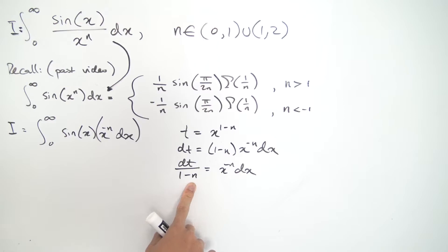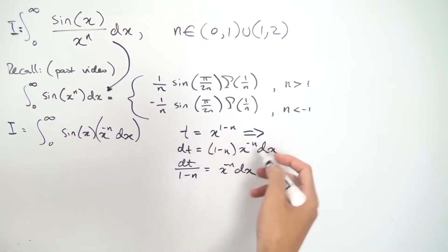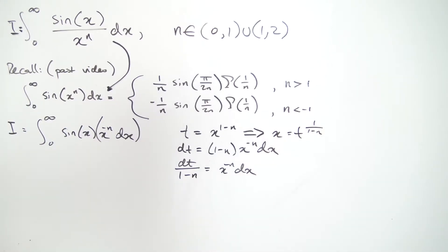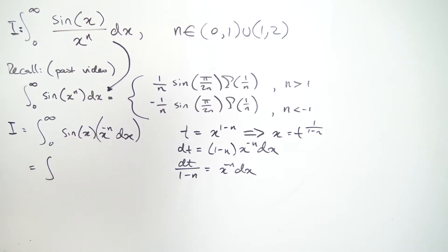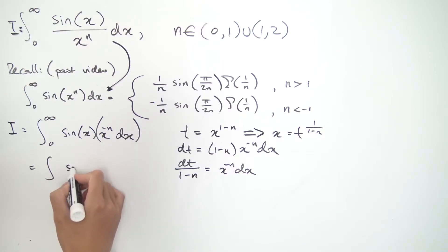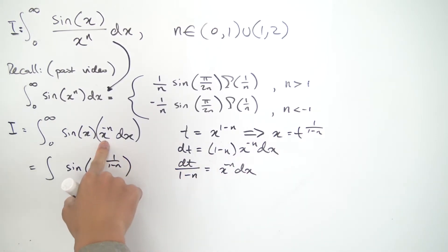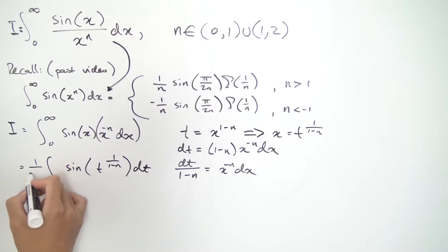We know x^(−n) dx evaluates to dt/(1−n). For the x inside sin(x), we manipulate t = x^(1−n) by taking the (1−n)-th root of both sides to get x = t^(1/(1−n)). So once we plug in, the integral becomes (1/(1−n)) times the integral of sin(t^(1/(1−n))) dt.